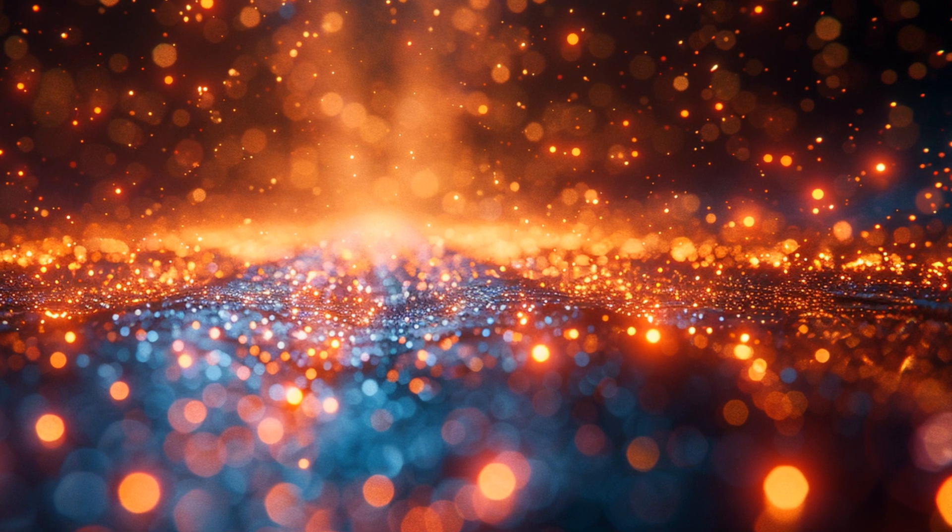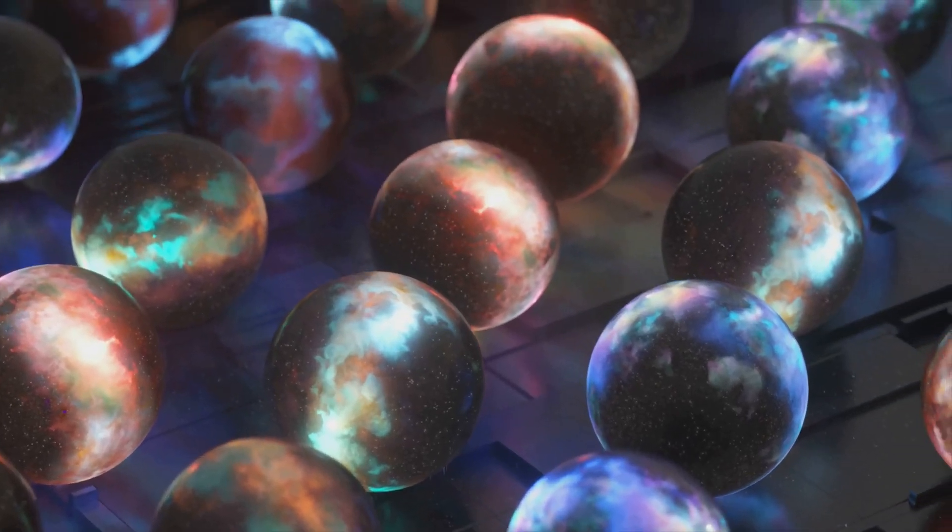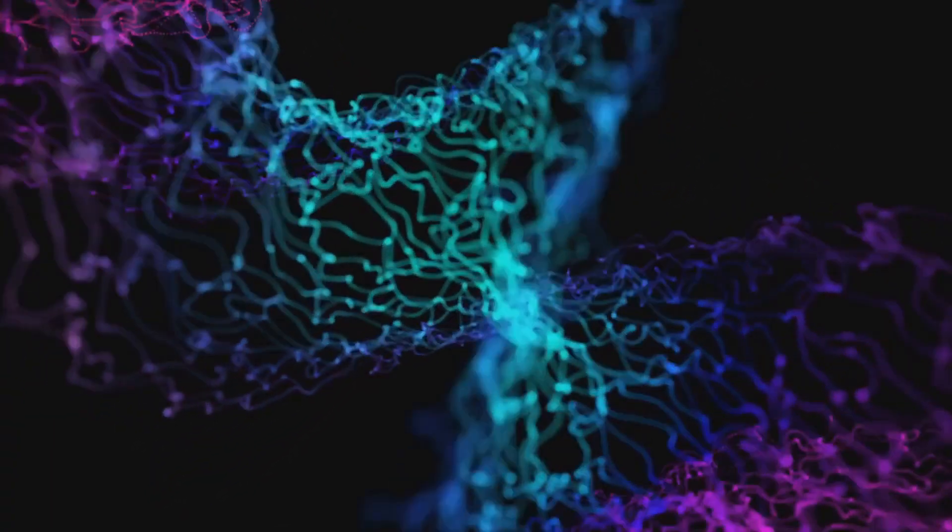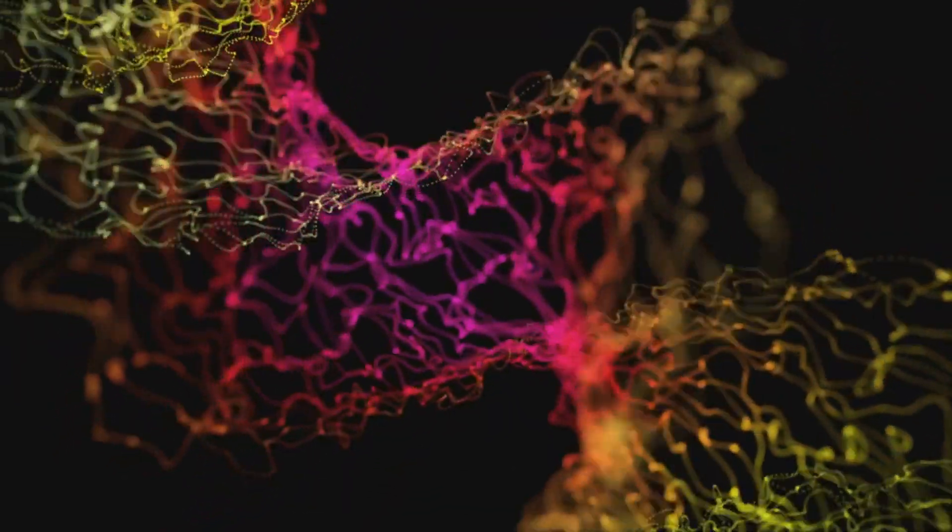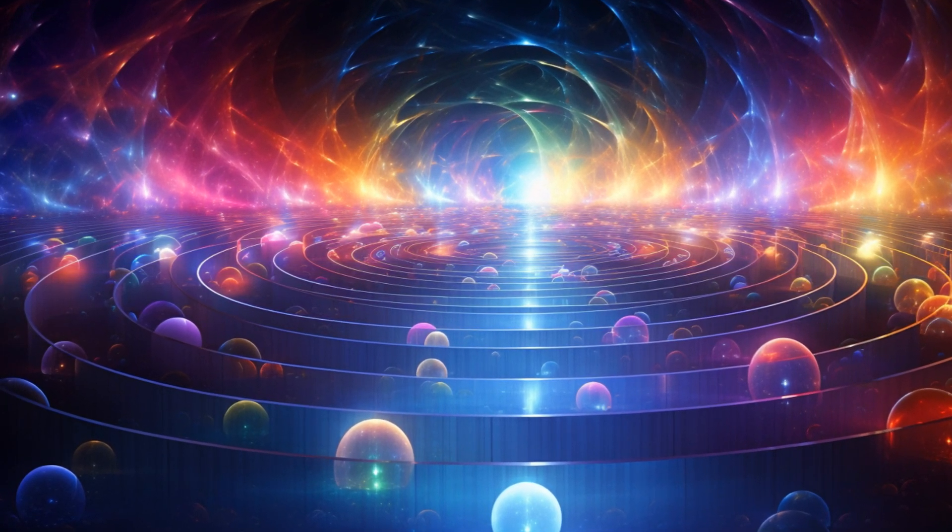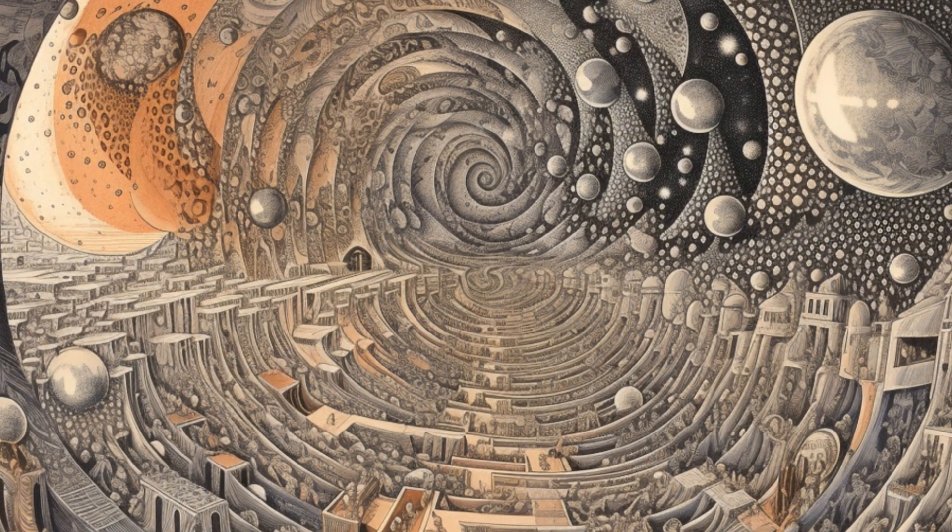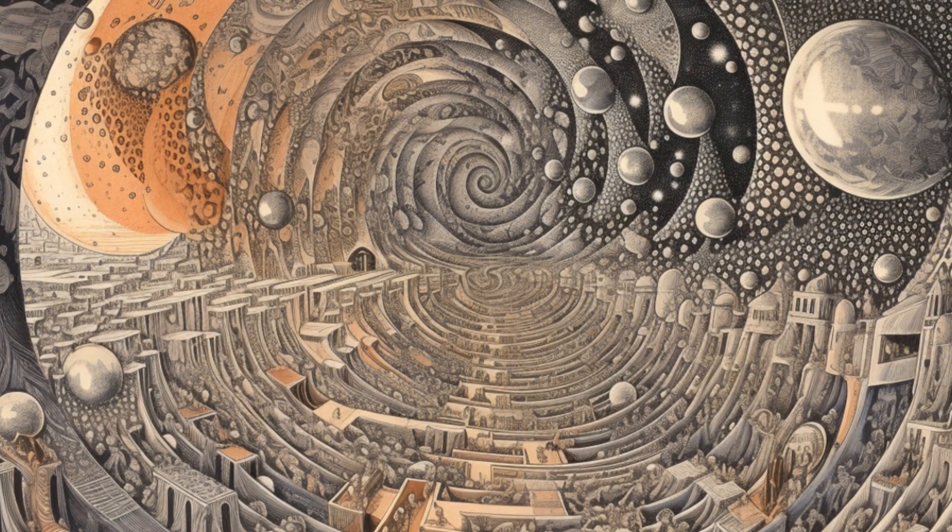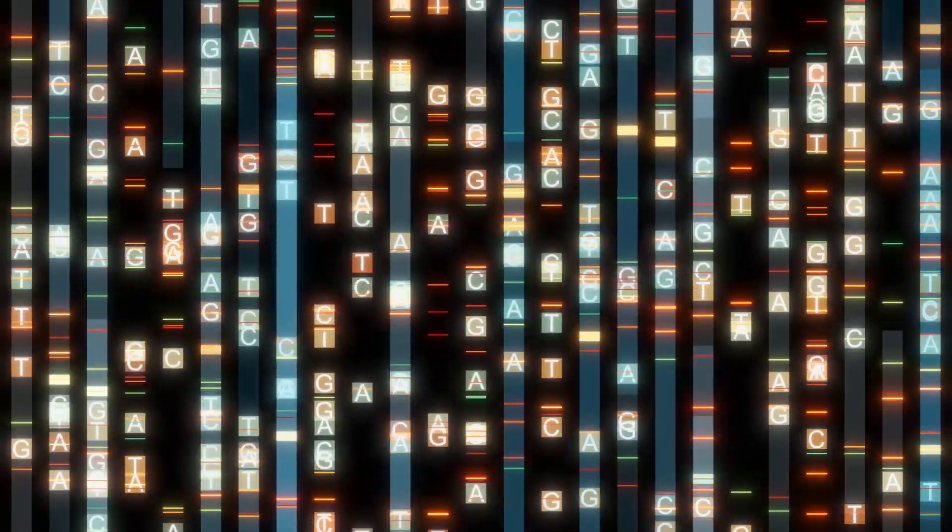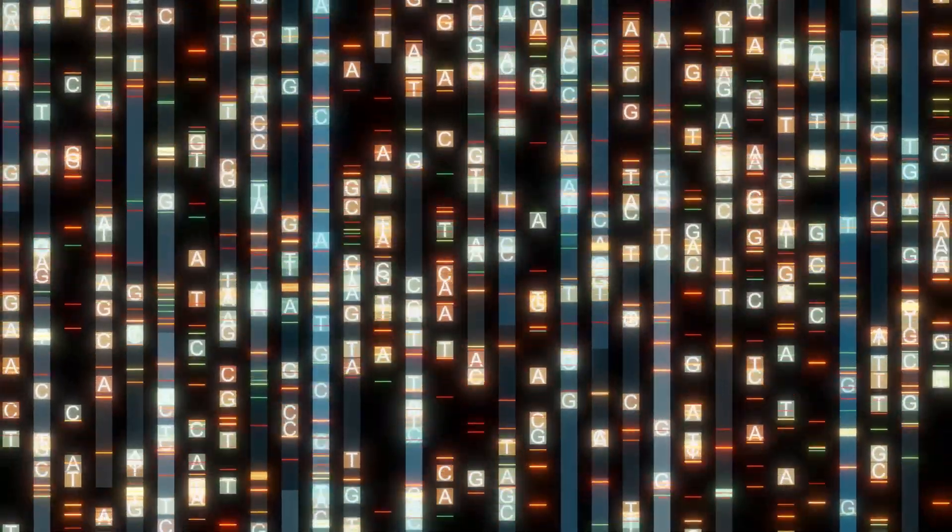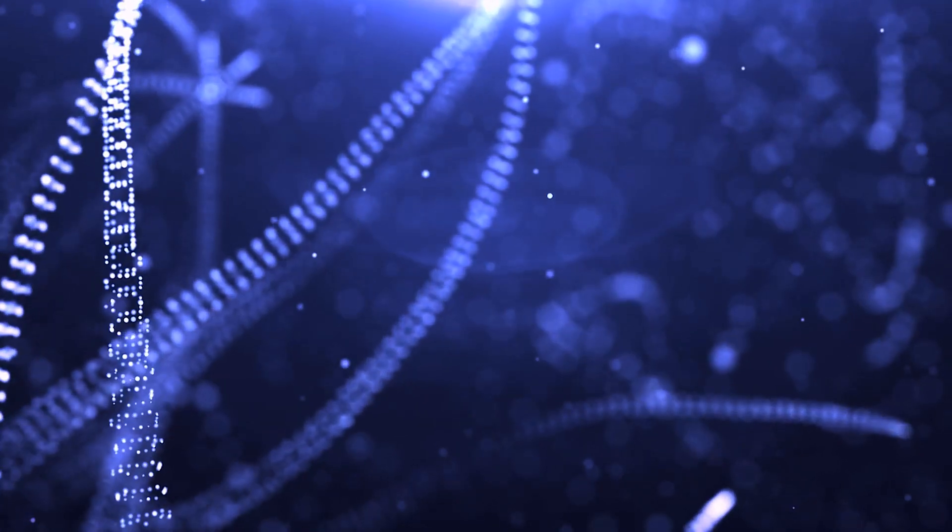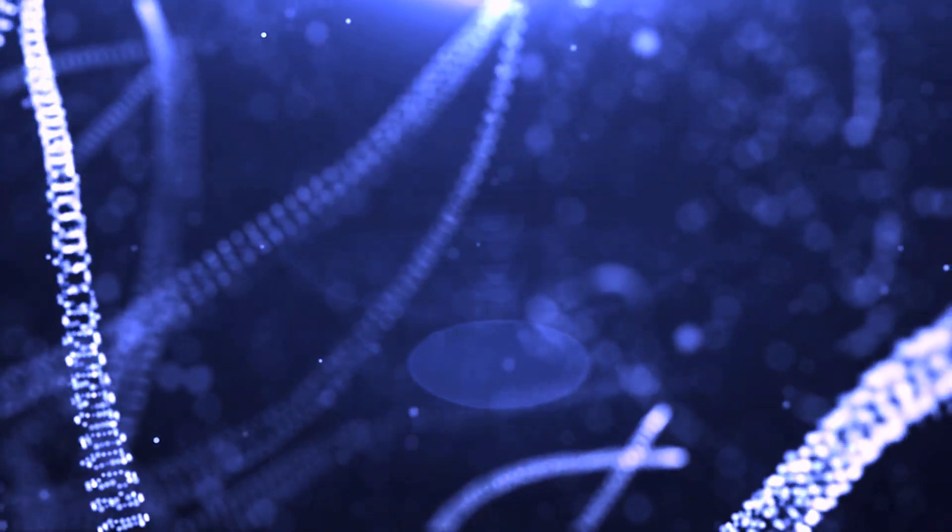In a multiverse, each universe could have unique string vibrations, coding different physical laws. This means that the properties of particles and forces could vary from one universe to another, leading to a rich diversity of possible worlds. Some universes might have physical laws that are very similar to our own, while others could be radically different. The idea of a multiverse challenges our understanding of reality and suggests that our universe might be just one of many possible configurations. This is like DNA, where the order of nucleotides makes each organism unique. Just as the sequence of nucleotides in DNA determines the characteristics of an organism, the specific configuration of physical laws and constants in a universe determines its properties. This analogy highlights the idea that information encoding is a fundamental principle that can be applied to both biological and cosmological systems.